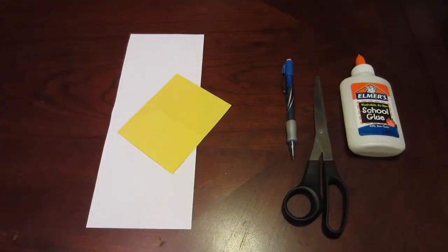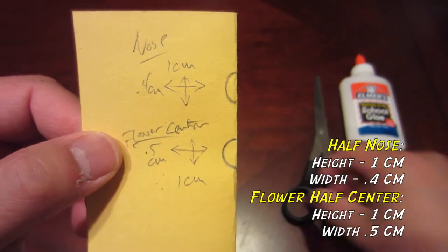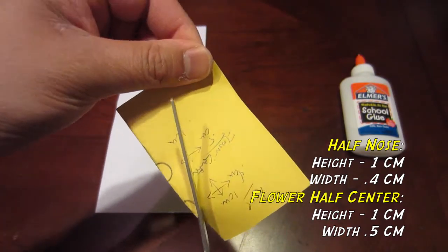Now let's make the nose and flower. Take your small piece of yellow paper and fold it in half. Next, draw a half oval and half circle on the fold. Measurements are posted. When ready, start cutting out both shapes.